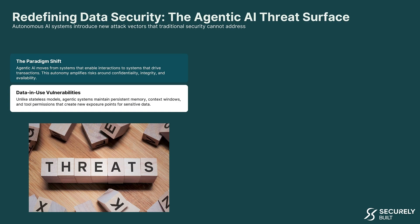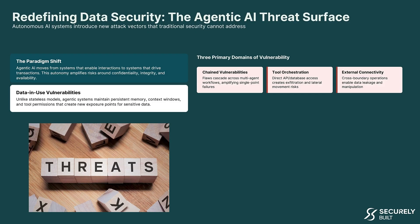There are three primary domains of vulnerability. First, chain vulnerabilities, where flaws cascade across multiple agent workflows, amplifying what might start as a single point of failure. Second, tool orchestration issues — when agents have direct API or database access, this creates risk for data exfiltration and lateral movement. Third, external connectivity, where cross-boundary operations enable data leakage and manipulation.